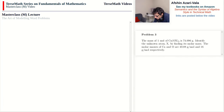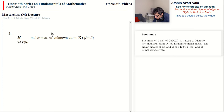Problem 3: the mass of one mole of Ca(OX)₂ is 74.096 g. Identify atom X by finding its molar mass. Molar masses of Ca and O are 40.08 and 16 g/mol. The bracket notation means there are two groups of OX. With M representing the molar mass of X: 74.096 = 40.08 + 2(16 + M). Total mass equals the mass of Ca plus two groups of OX.